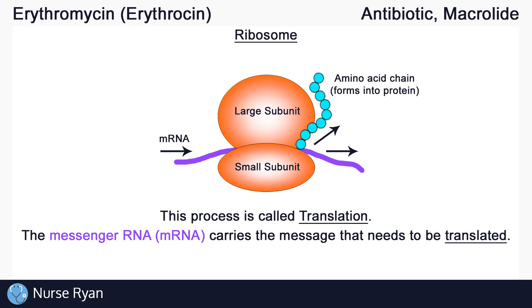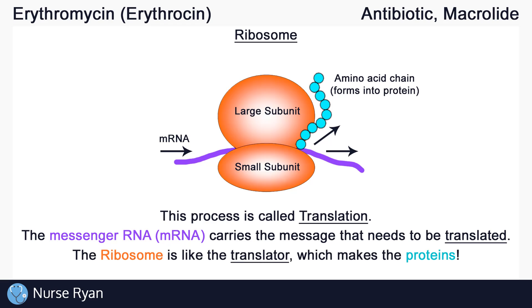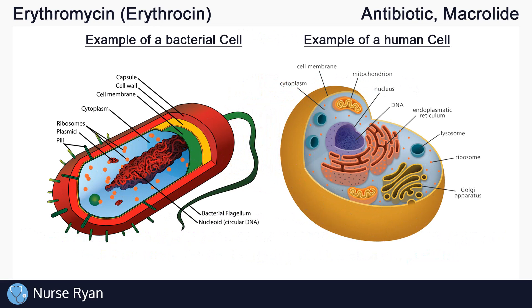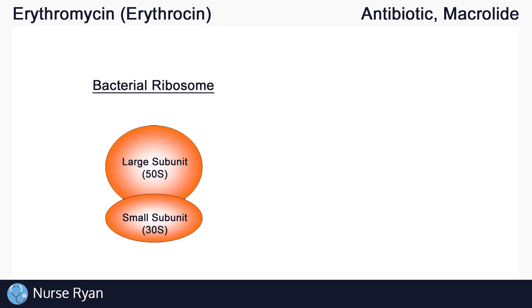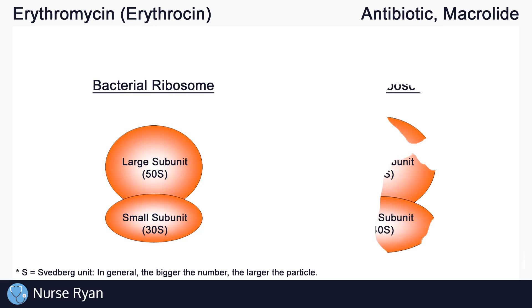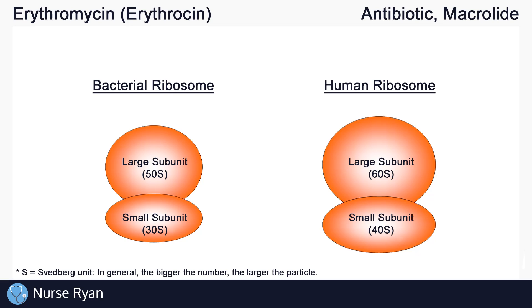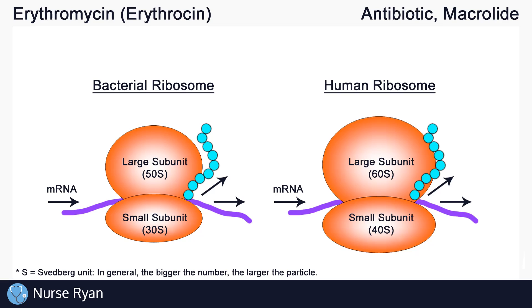You can think of messenger RNA as just that — the message that needs to be translated. And the ribosome is like the translator, which takes that message and uses it to make proteins. Bacterial cells and human cells both need these proteins to function, so how can we inhibit just the production in bacterial cells? It just so happens that ribosomes are slightly different in bacterial cells. In bacterial cells, the large subunit of the ribosomes is 50s and the small subunit is 30s. S stands for the Svedberg unit — the bigger the number, the larger the particle. In human cells, ribosomes are made up of a 60s and a 40s subunit. So essentially, they function the same way to make proteins, they're just different sizes.